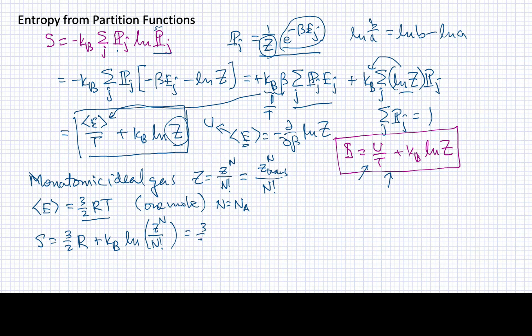If I write all this out, I'll have log of Z to the n, but that's just going to be equal to n log Z. Then I'm going to have minus log of n factorial.